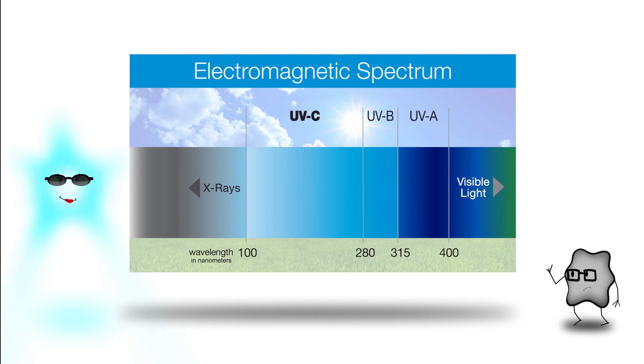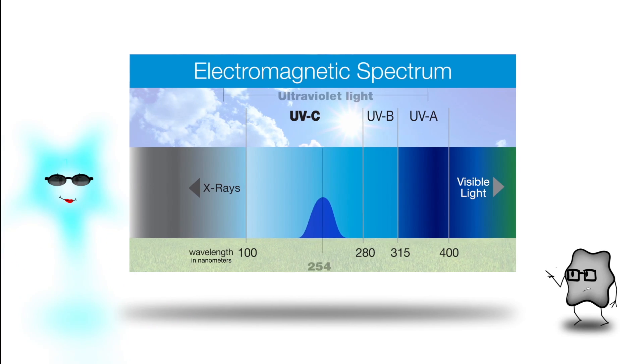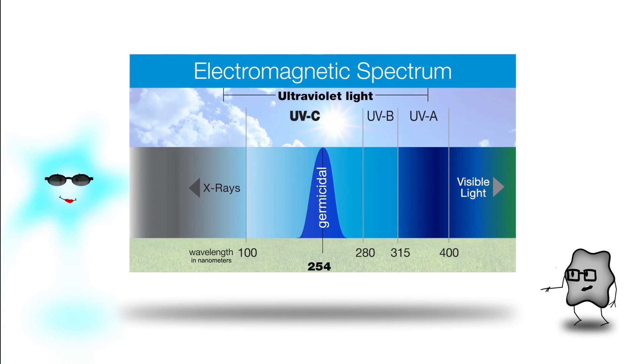UV light is broken down into three categories: UVA, UVB, and UVC. UVC is the kind of UV light that is germicidal.